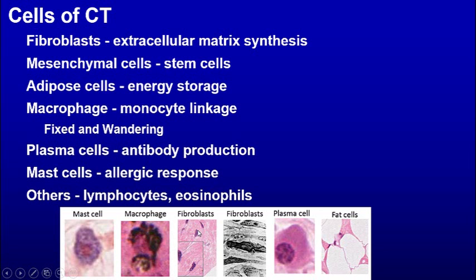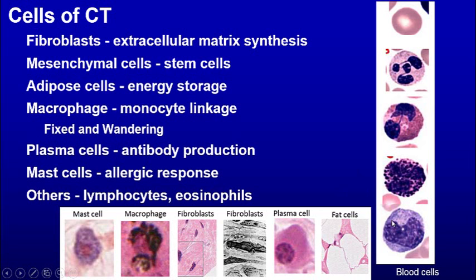Here we see the mast cell, macrophage, and fibroblast — you can see the nuclei and a lot of extracellular matrix. Here's a fibroblast again with its nuclei, plasma cells, and fat cells.